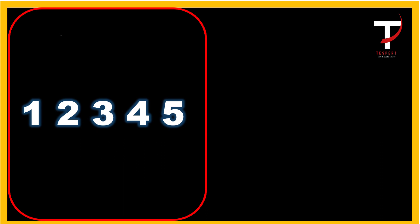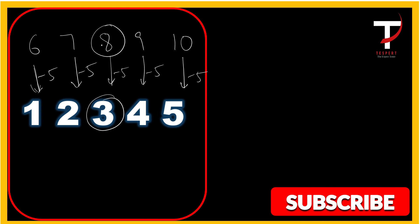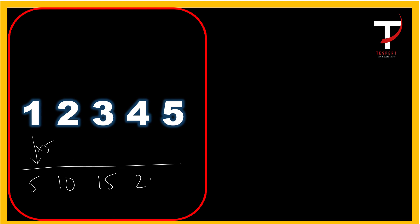Now what if we subtract the same value? Take 6, 7, 8, 9, 10 in arithmetic progression and subtract 5 from all numbers. We get the reduced values, and the average also decreases by 5. So subtracting the same number from all values decreases the average by that same number. For multiplication, if we multiply each term of 1, 2, 3, 4, 5 by 5, we get 5, 10, 15, 20, 25.